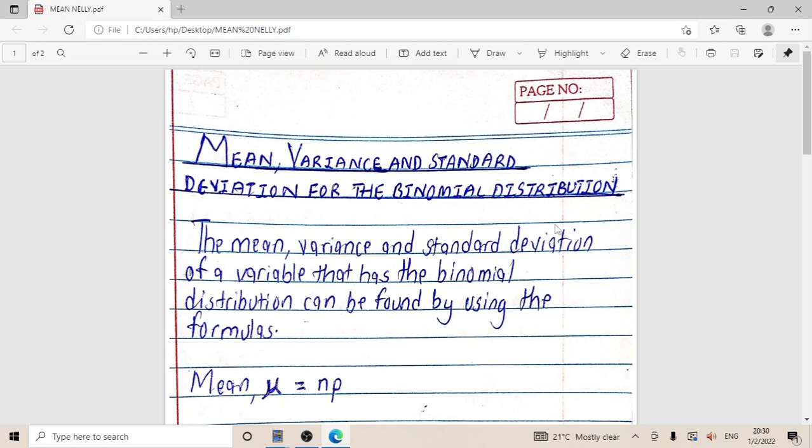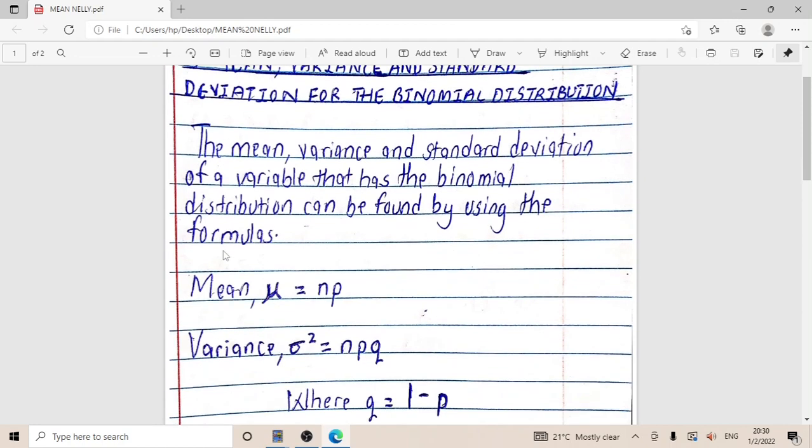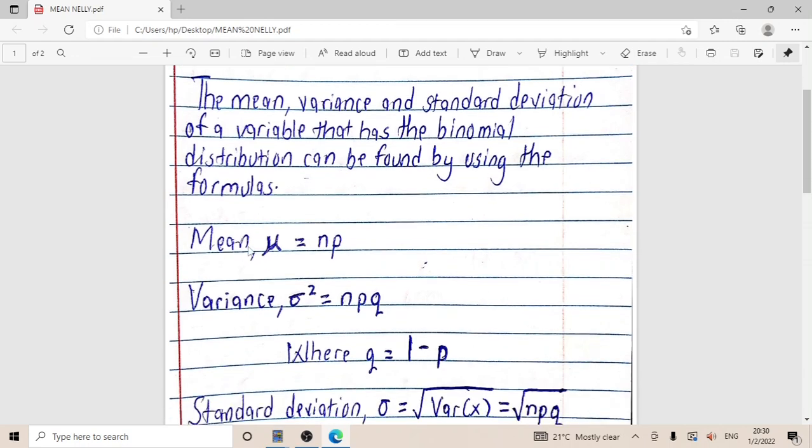Before you watch this video, make sure you have watched the previous videos. The mean, variance and standard deviation of a variable that has the binomial distribution can be found by using the formulas. For mean, which is the same as mu, equals np, where n is the number of trials and p is the probability of success.